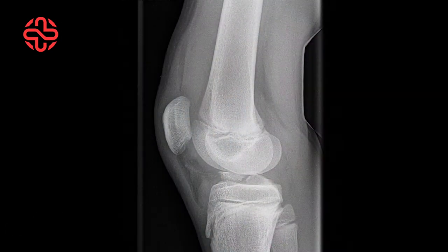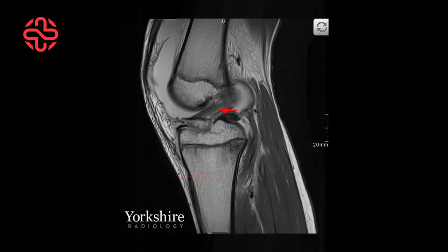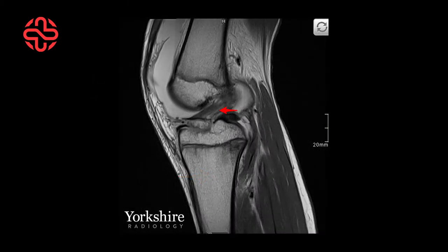The Meyer and McKeever classification is often used to decide the management plan. On this plain x-ray, the displaced fragment is highlighted. The MRI scan clearly shows the ligament to still be intact — this is the dark structure running diagonally.